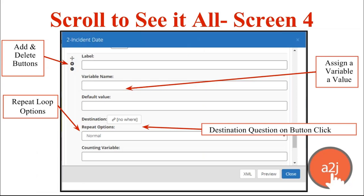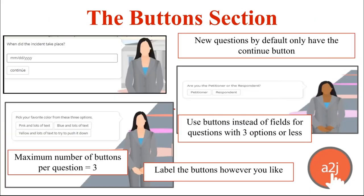If we continue to scroll down, we get to the Button section. By default, there is one button on every brand new question — the Continue button — because the end user has to have some way to move from one question to the next. On the buttons, you can have a label that displays to your end user, assign a variable and value that gets set when the end user selects it, and set the destination — the next question in line for your end user.